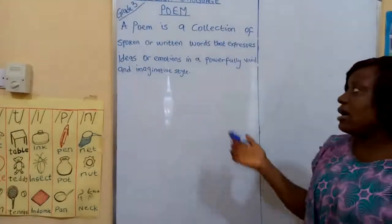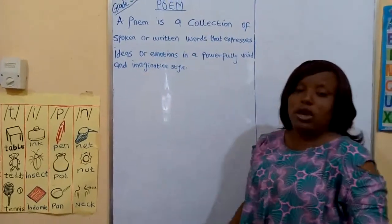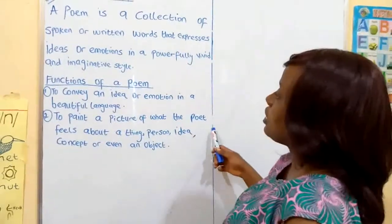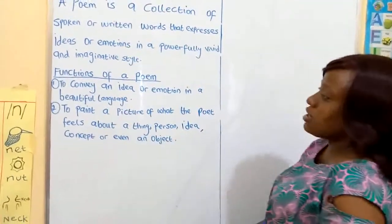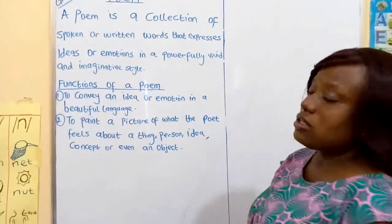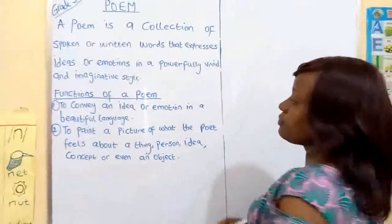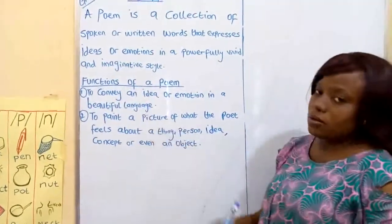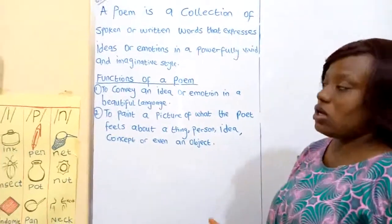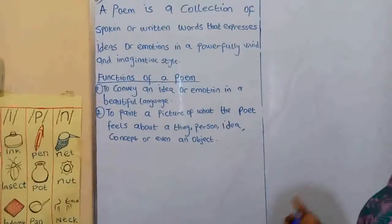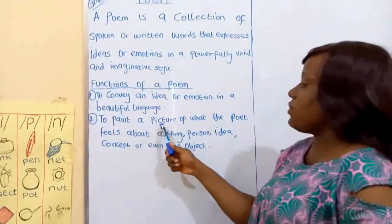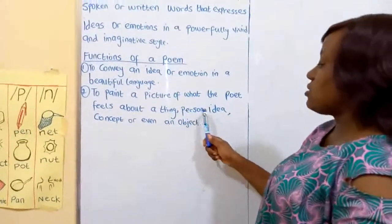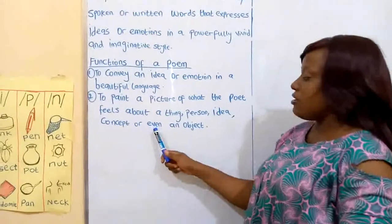We are going to look at the functions of a poem — I am going to give us just two functions. Number one: to convey an idea or emotion in a beautiful language, either to the listener or to the reader. Number two: to paint a picture of what a poet feels about a thing — a person, idea, concept, or even an object.